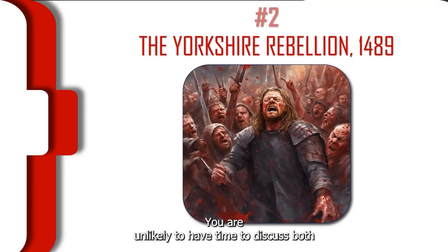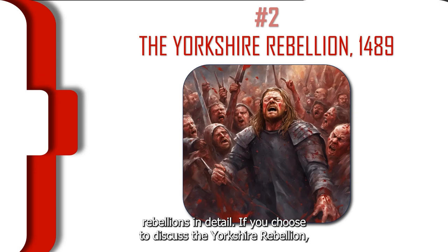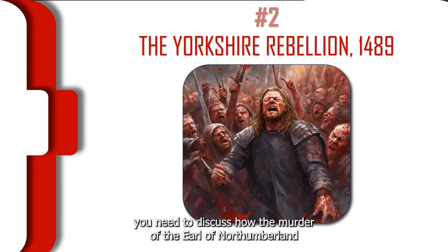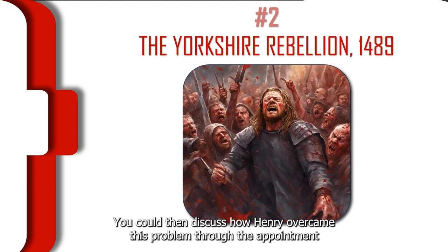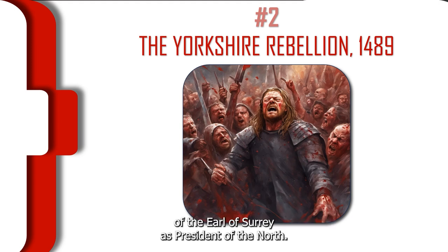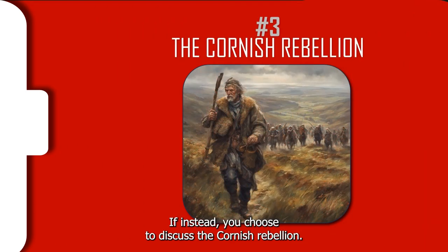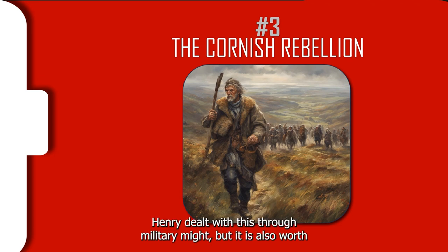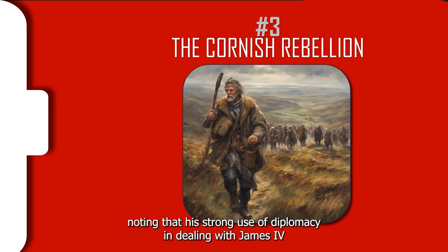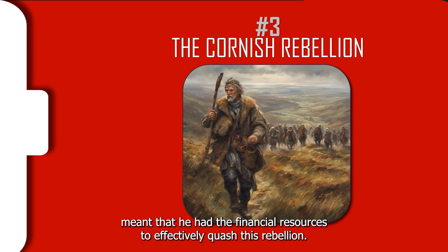You are unlikely to have time to discuss both rebellions in detail. If you choose to discuss the Yorkshire Rebellion, you need to discuss how the murder of the Earl of Northumberland destabilised the governance of the north of England. You could then discuss how Henry overcame this problem through the appointment of the Earl of Surrey as President of the North. If instead you choose to discuss the Cornish Rebellion, focus on how this was a serious threat to Henry due to the number of rebels that amassed under the noble leadership of Lord Audley and the additional complication of Perkin Warbeck's arrival. Henry dealt with this through military might, but it is also worth noting that his strong use of diplomacy in dealing with James IV meant that he had the financial resources to effectively quash this rebellion.